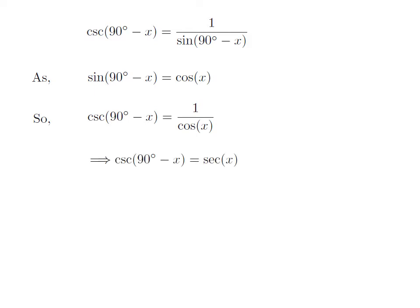As 1 divided by cosine of x is equal to secant of x, cosecant of 90 degrees minus x is equal to secant of x.